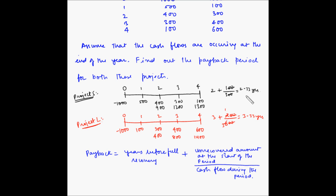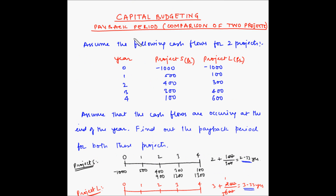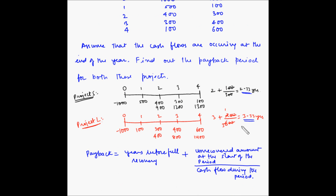Project S has a payback period of 2.33 years while project L has a payback period of 3.33 years. Project L will recover the money later than project S. So if we compare these two projects, preference will be given to project S as per the payback period method. Even though project L may have much better cash flows in the later years, this payback period method ignores it and prioritizes only those projects which can recover the original capital sooner.